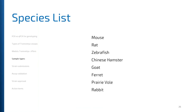We genotype mice and rats, but we also do zebrafish, Chinese hamster, goats, ferrets, prairie vole, and rabbits. If there's a species you're genotyping that we don't currently offer, feel free to reach out to us and we can go over your needs.